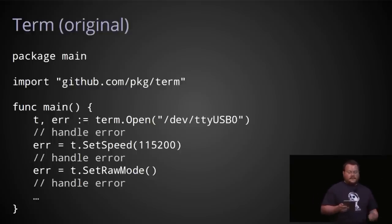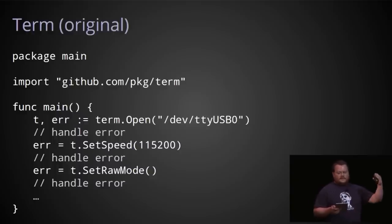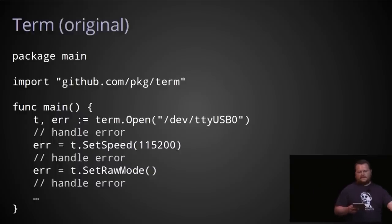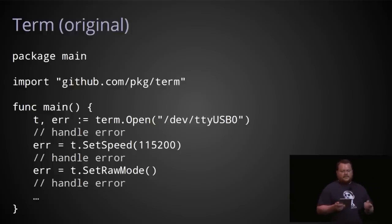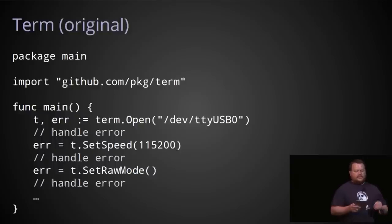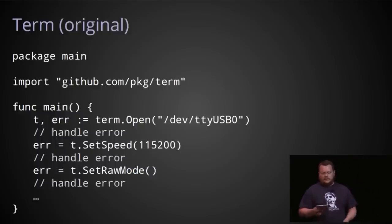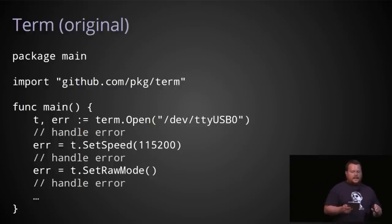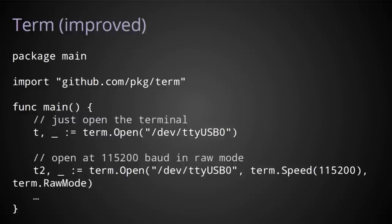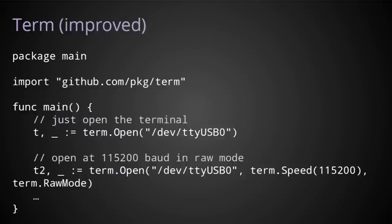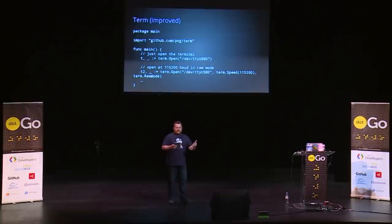In this prior version, to open the serial device, change the speed, and set it into raw mode, you have to do each of these steps individually, checking the error at every stage. Even though this package is trying to provide a friendlier interface to an even lower-level interface, it's still left too many procedural warts for the user to deal with. That grind of setting an option, checking the error, setting the next one, checking the error — that's all just gone in the new version.